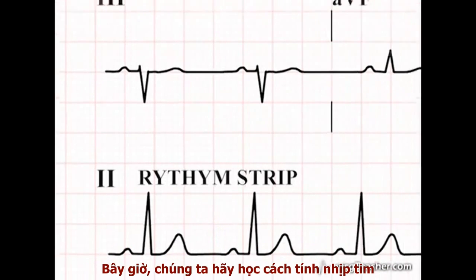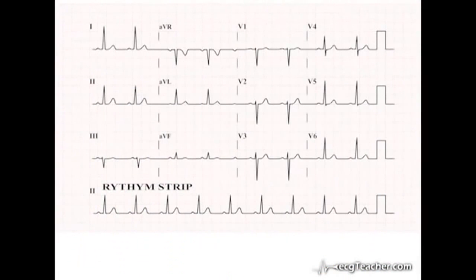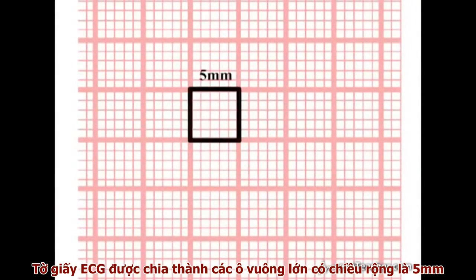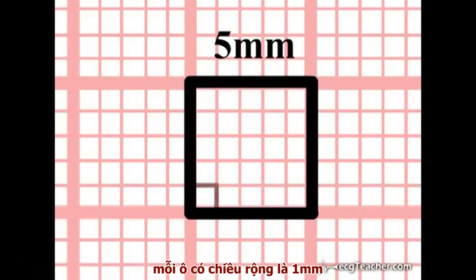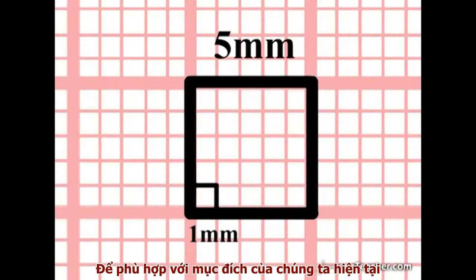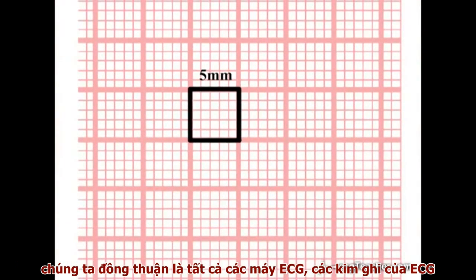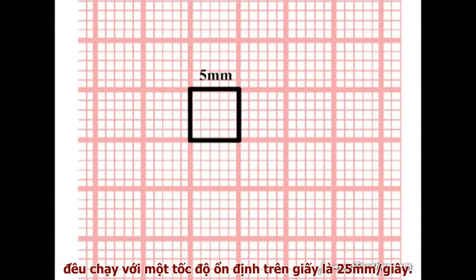For now, let's deal with the calculation of heart rate. ECG recording paper is divided into large squares 5mm wide. These large squares are in turn further subdivided into small squares, each of 1mm in width. In all ECG machines, the recording needles run at a constant speed over the ECG paper of 25mm per second.